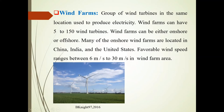Wind farms can be onshore or offshore. Many onshore wind farms are located in China, India and United States. The favorable wind speed ranges between 6 meters per second to 30 meters per second in the wind farm area — this is the wind speed range required for a wind farm.